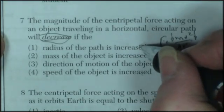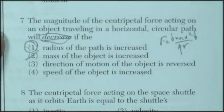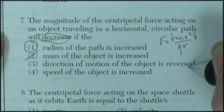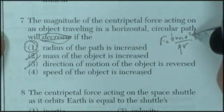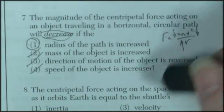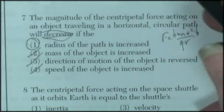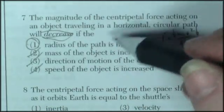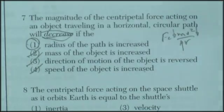Radius of the path is increased. That will work. Mass is increased. Nope. Direction of motion of the object is reversed. Now it's just going to be in the opposite direction. Speed of the object is increased. No, that will increase the centripetal force. It's always good with these kinds of choices to go find the correct answer first and then find it of the choices. Rather than trying to look at these and figure out which one's right, know which one is right and then go find it.